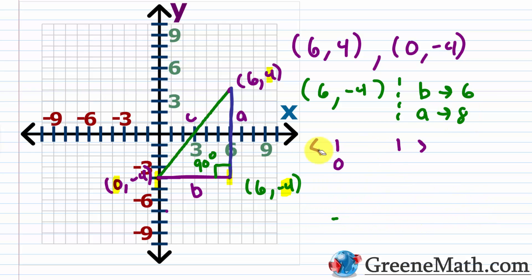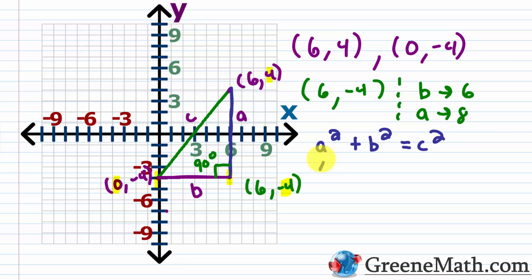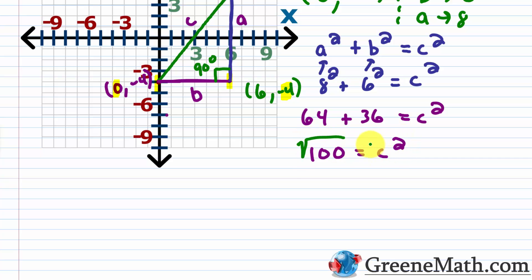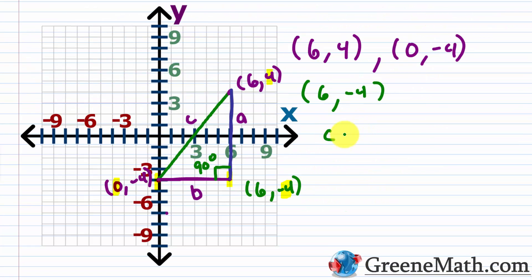Now we plug into the Pythagorean formula: A squared plus B squared equals C squared. We know A is 8 and B is 6, so we have 8 squared plus 6 squared equals C squared, giving us 64 plus 36 equals C squared, so 100 equals C squared. Taking the principal square root of each side, we get C equals 10.